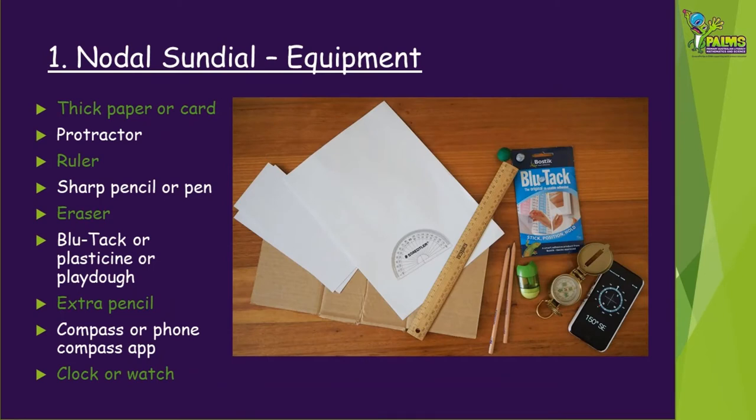To make a nodal sundial, you'll need thick paper or card, a protractor, a ruler, a sharp pencil or pen, an eraser, Blu-Tac, plasticine or Play-Doh, an extra pencil, a compass or a phone compass app, and a clock or watch.